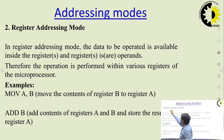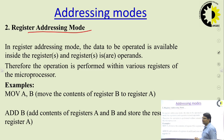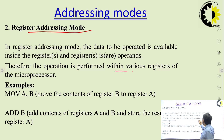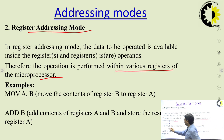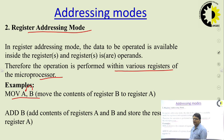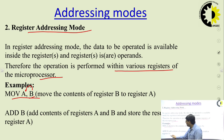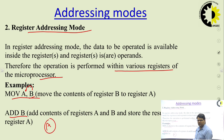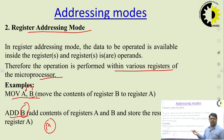The next type is register addressing mode. In this case, the operand is specified through a register in the instruction; therefore, the operation is performed between various registers in the microprocessor. For example, MOV A, B transfers data available in register B into the accumulator, where the operand is specified through registers. Another example is ADD B, where one operand is in the accumulator and the second operand is specified through register B. This type of addressing is known as the register addressing mode.